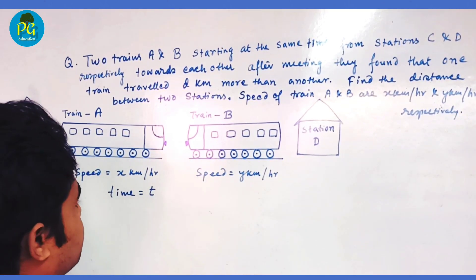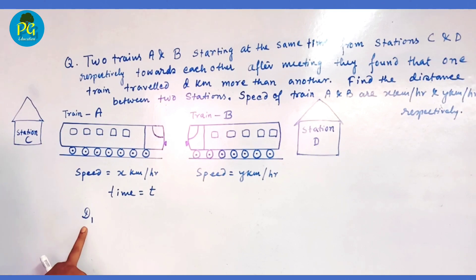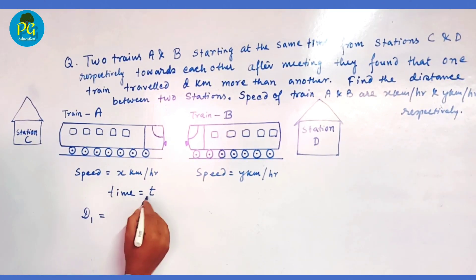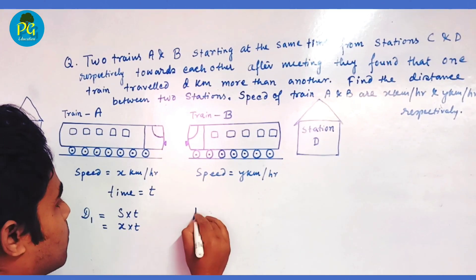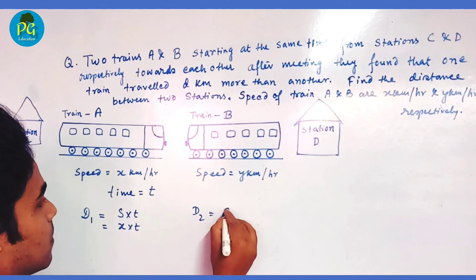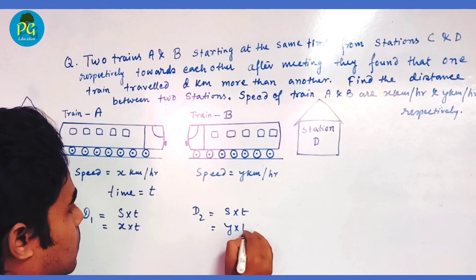So distance traveled by train A, D1, equals speed times time, which is X times T. If the distance traveled by train B is D2, then speed times time equals Y times T.